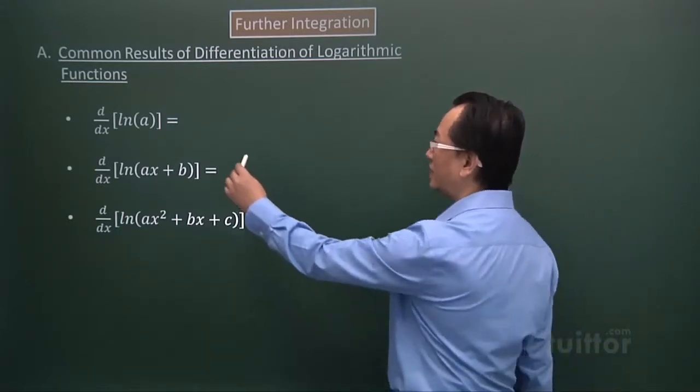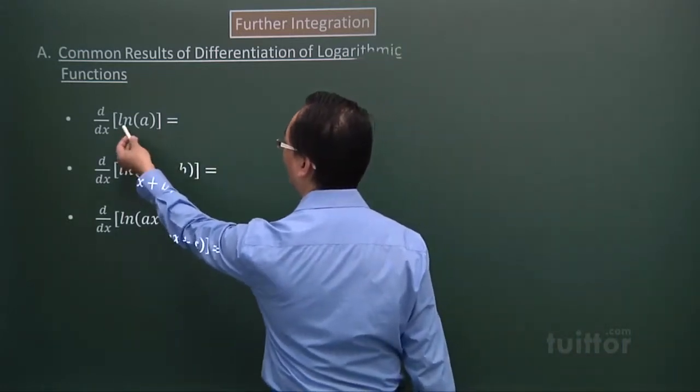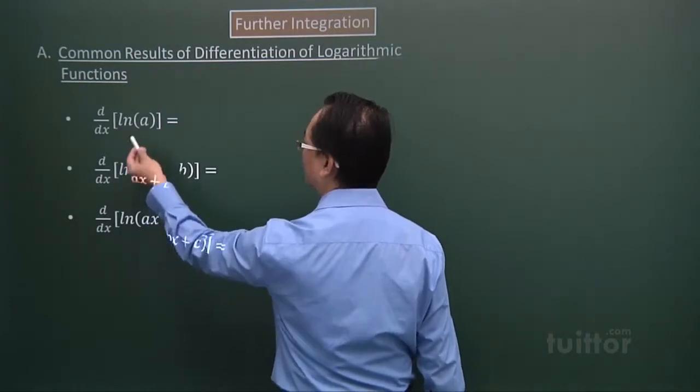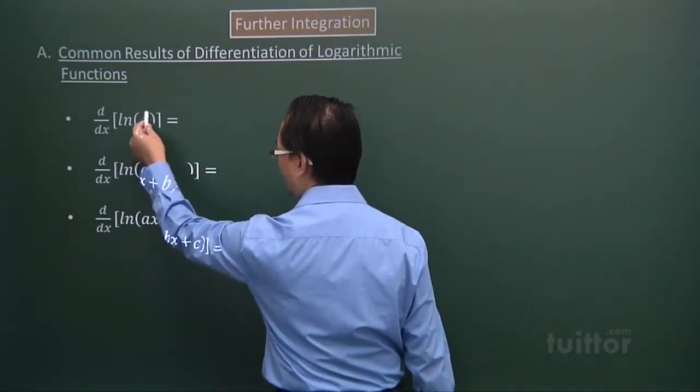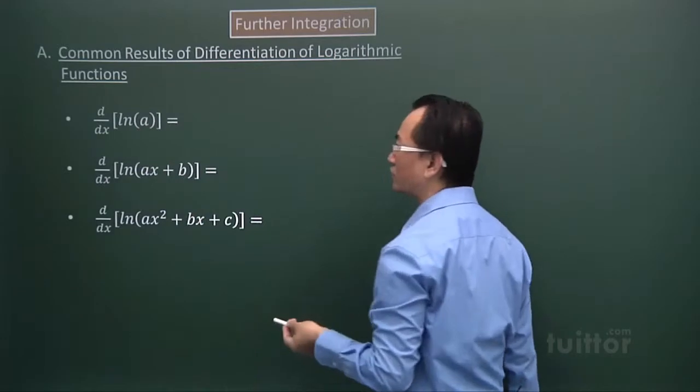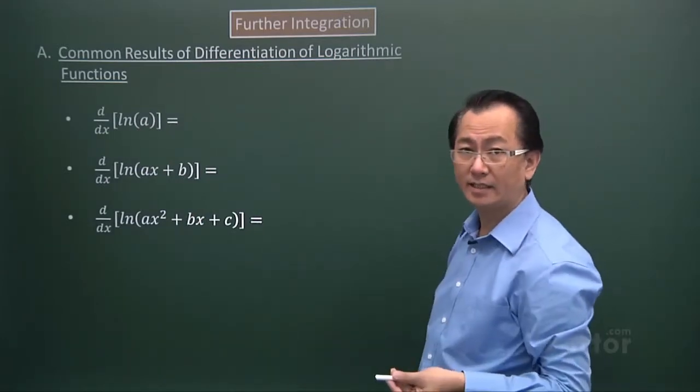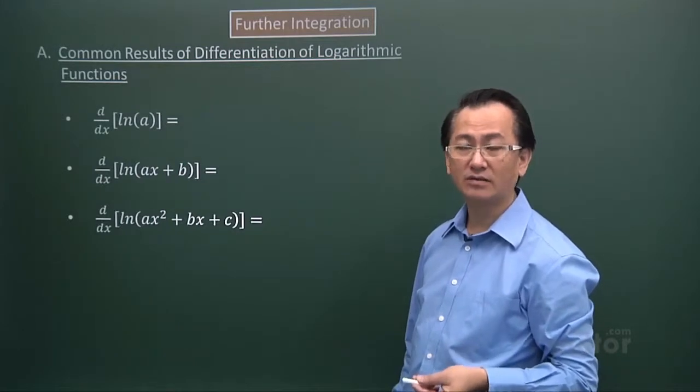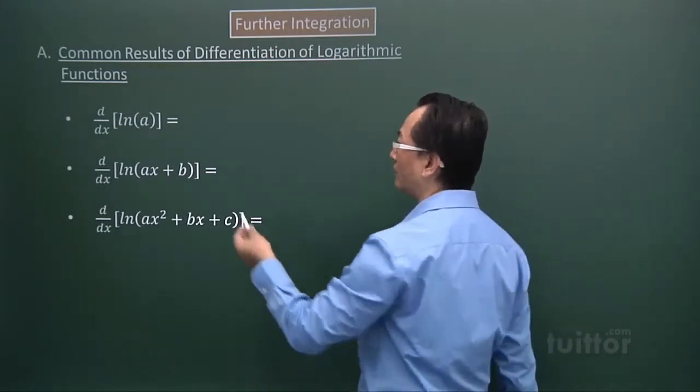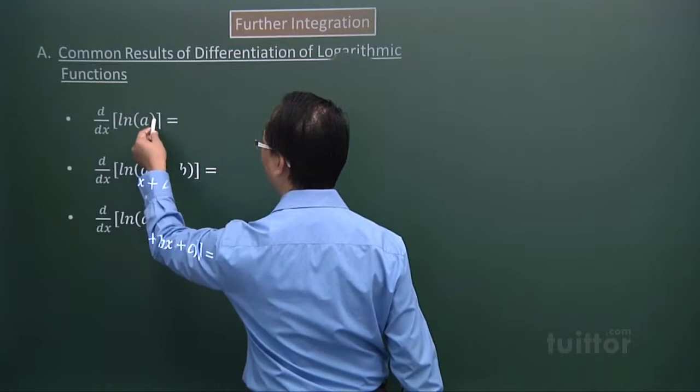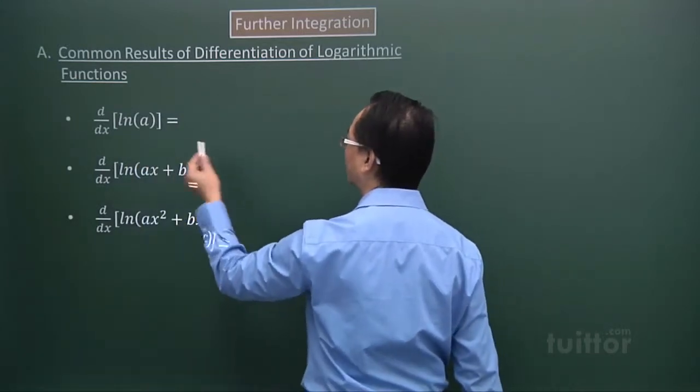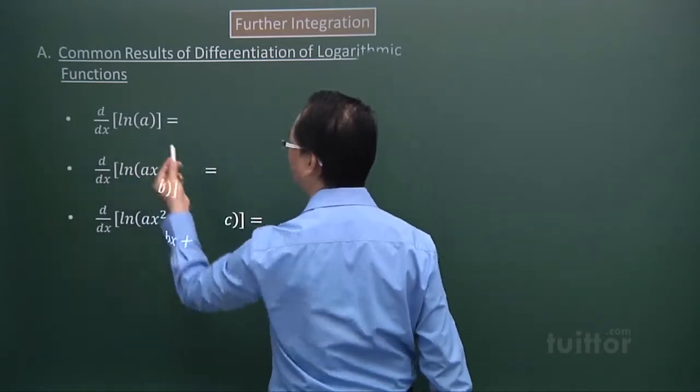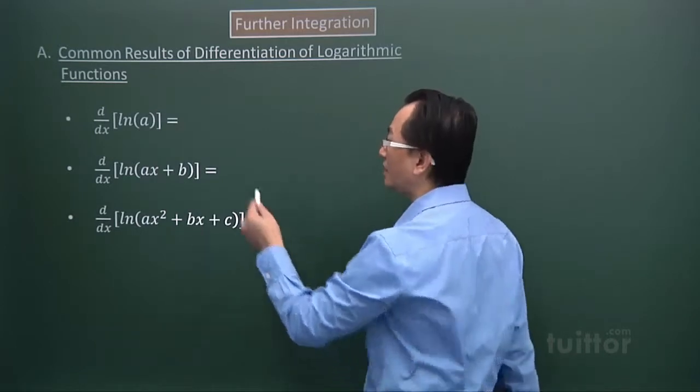So for this first one, ln(A), we have to specifically pay attention to the expression in the ln function. And that's A. A is a constant, and therefore this whole expression will give me a constant result. Therefore differentiating a constant will give me 0.